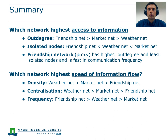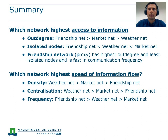When looking at speed of information flow, the weather information network shows the highest density and centralization and thus the highest speed of information flow. From an intervention point of view, this must be assessed with care, as TV as a source of information is hard to influence due to its formality level. However, due to TV's outstanding popularity as a weather information source, CIMIT and Blue Gold should consider options to create more location-specific weather information content to disseminate via TV. Furthermore, the farmer friendship network seems most efficient in disseminating information, as farmers indicate a daily frequency of information exchange — the highest among all networks.